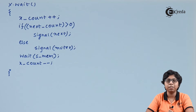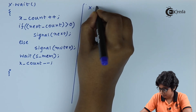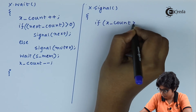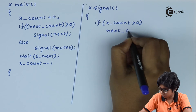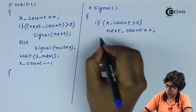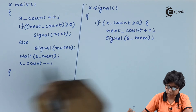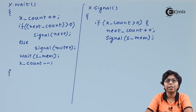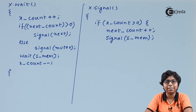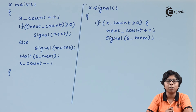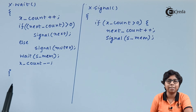Now we will see how the signal operation is invoked. First, if x_count is greater than zero, meaning a process is attached to the condition variable, we increment next_count to indicate the process has suspended on the next semaphore. Then we use the signal(x_sem) function to release the process that was waiting in x.wait.